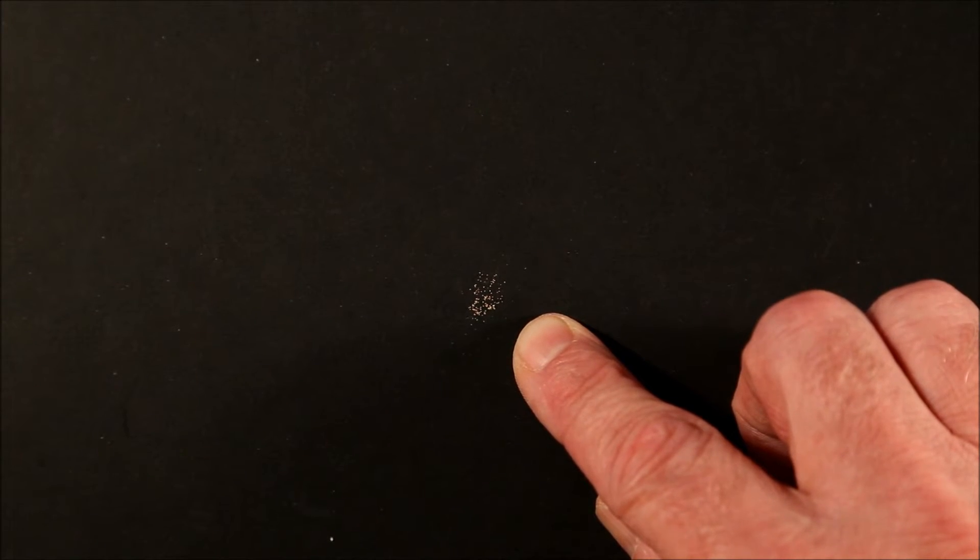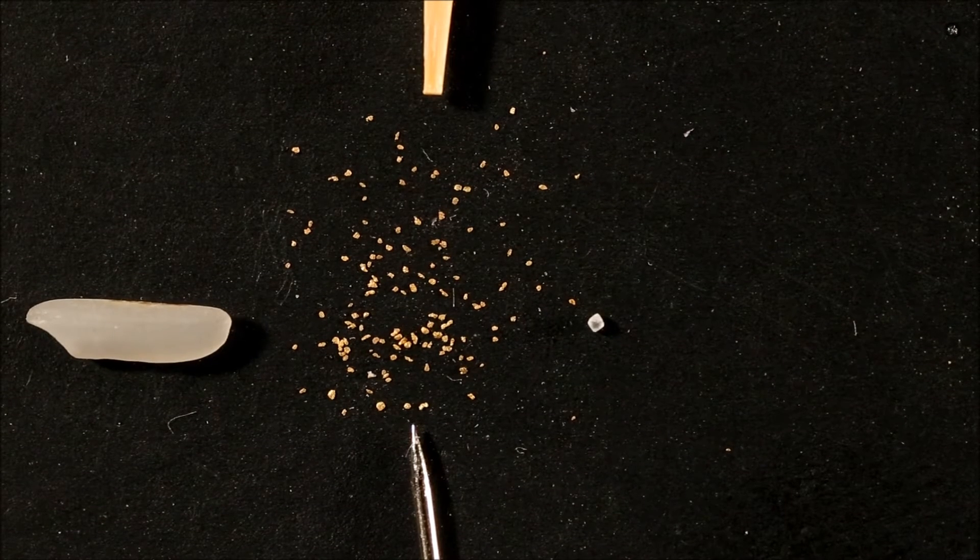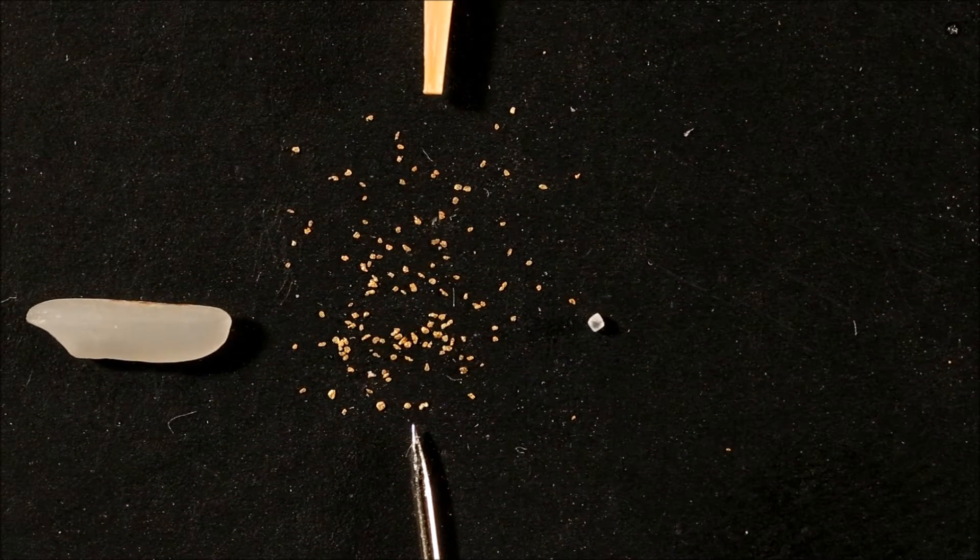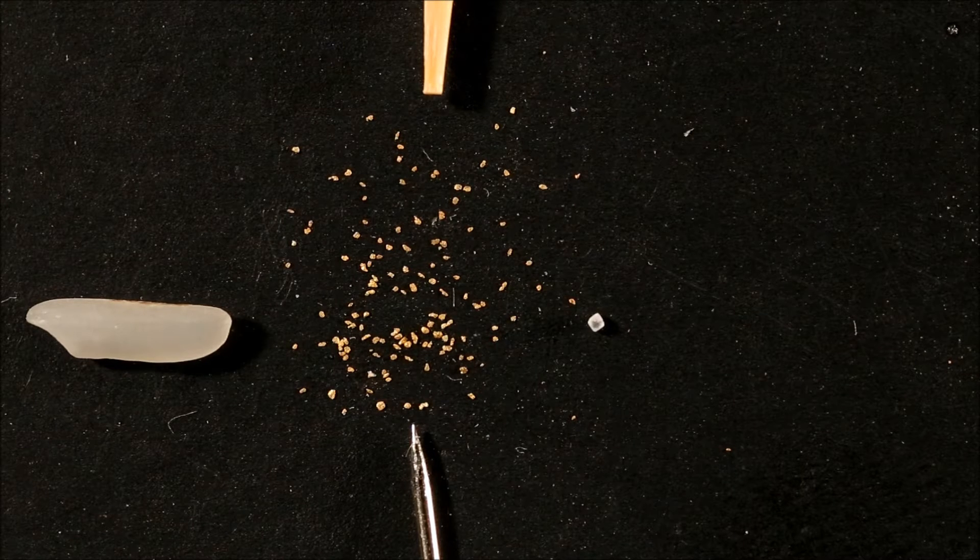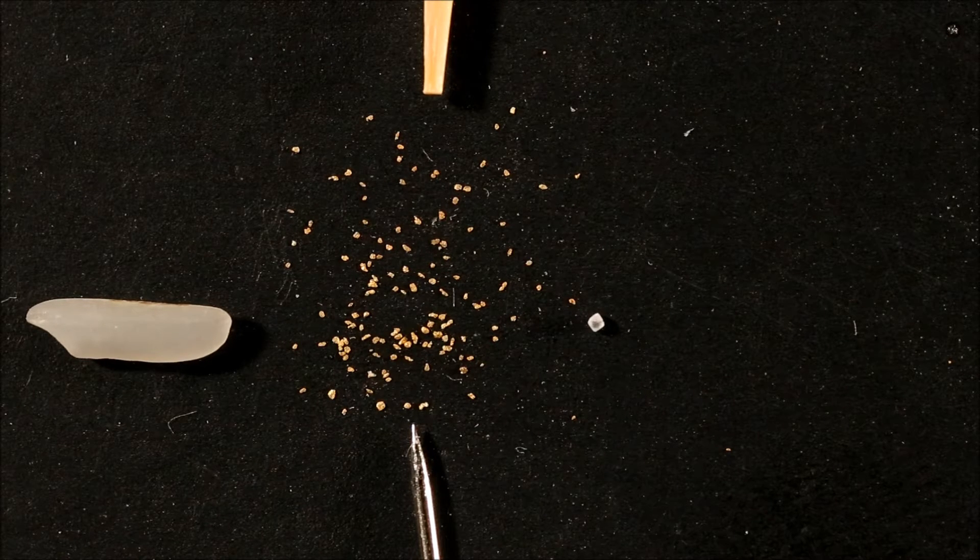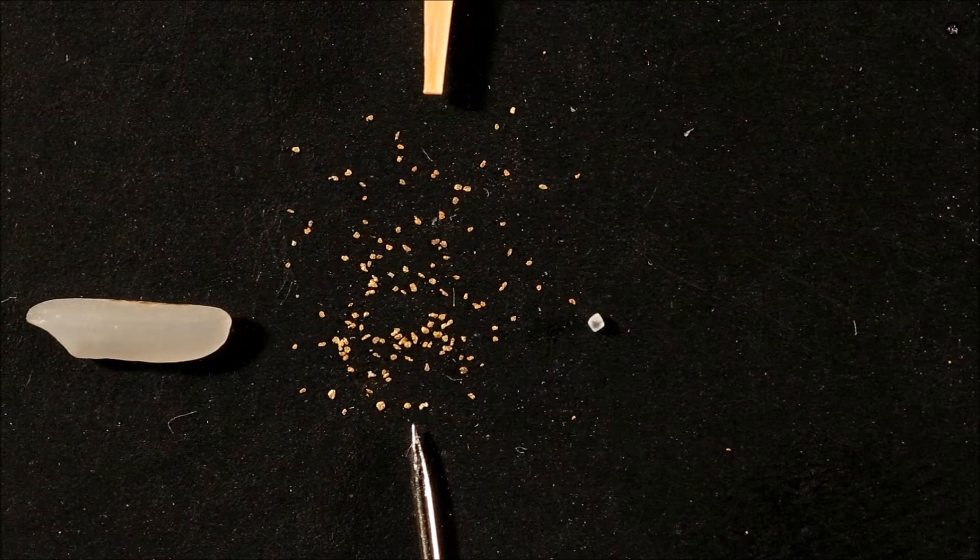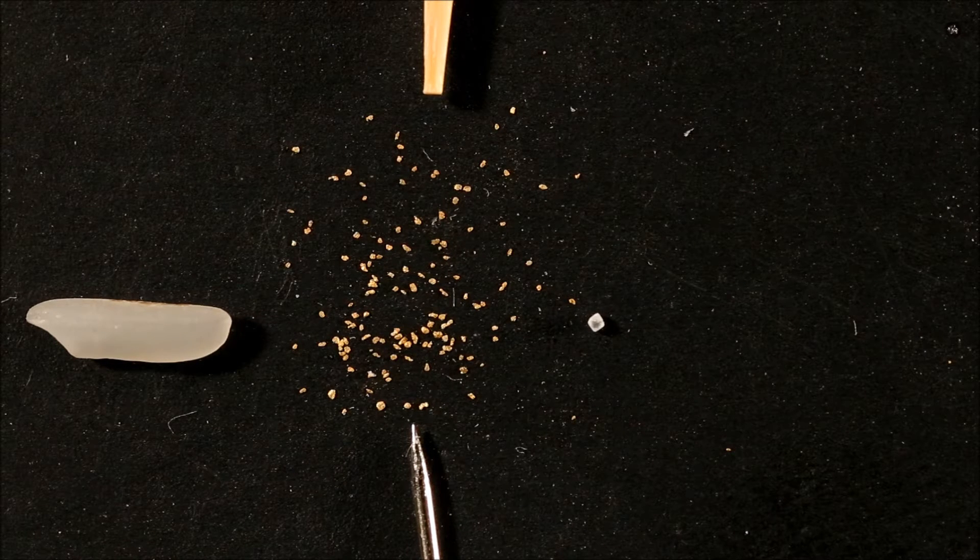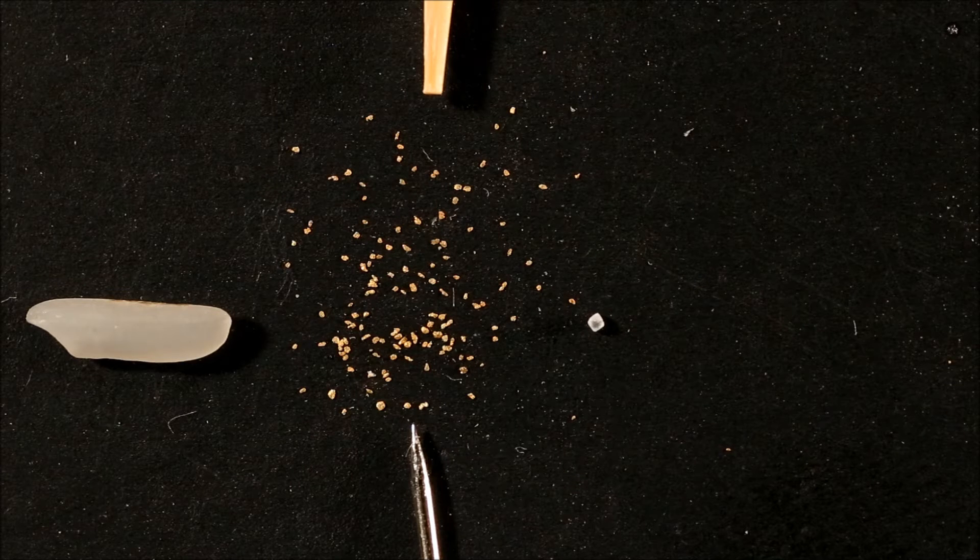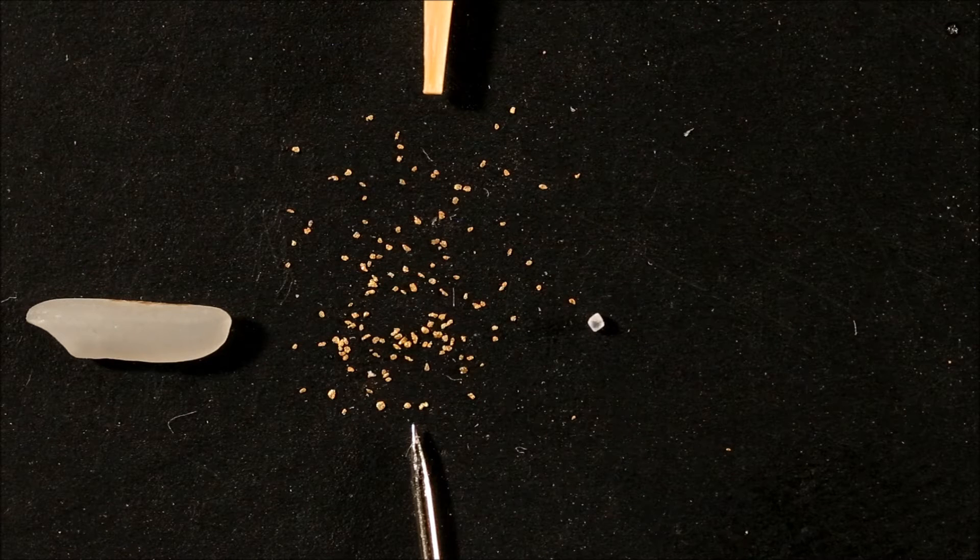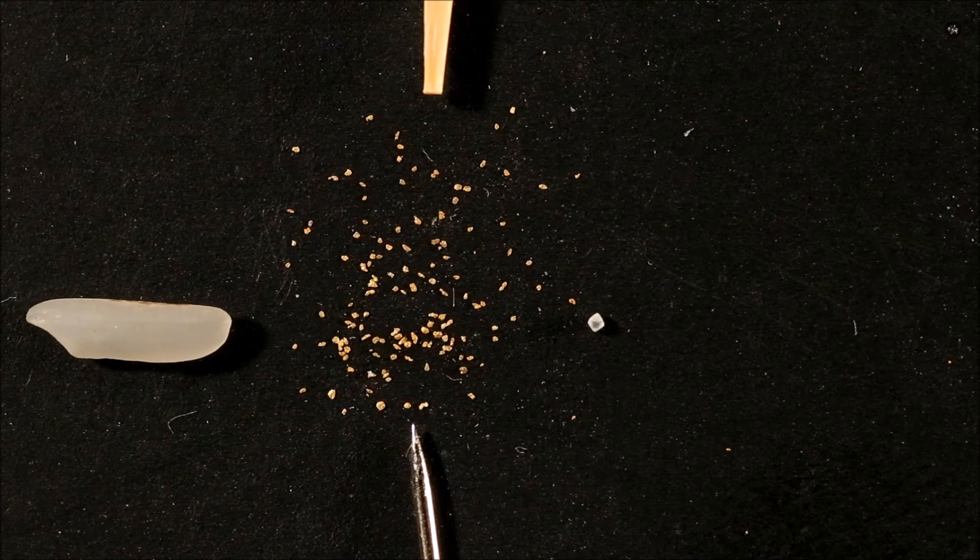But before we get started, let's take a closer look. Okay, that's a little better. Starting at 9 o'clock, we have a single grain of rice. At 12 o'clock is the end of a standard toothpick. At 3 o'clock is a single grain of salt. And down around 6 o'clock is a standard pin. This will give you some idea of the scale of size of the flower gold.